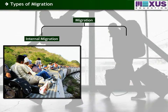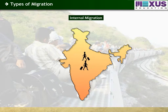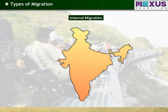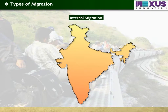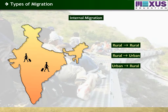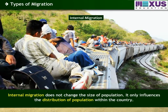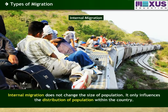Migration can be internal, that is within the country, or international, between countries. Internal migration means shifting from one place to another within the country. In India, internal migrations can be classified into four types: rural to rural migration, rural to urban migration, urban to rural migration, and urban to urban migration. Internal migration does not change the size of population; it only influences the distribution of population within the country.